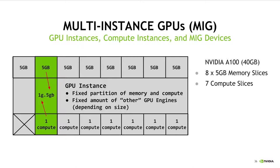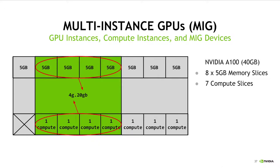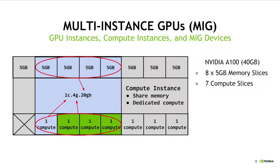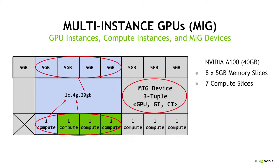Anyone familiar with MIG has likely seen names like this already in the output of NVIDIA SMI. Now, jumping to a slightly bigger GPU instance and digging inside of it, we see that we can actually perform a second level of partitioning, which subdivides a GPU instance into a set of what we call compute instances, all of which share access to the memory of the wrapping GPU instance but have their own dedicated compute resources. Once we've done this, we now have all the pieces required to form what's called a MIG device, which is the actual entity recognized by CUDA on top of which workloads are able to run.